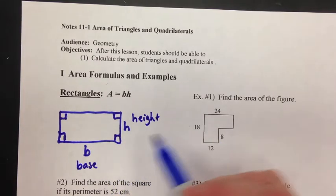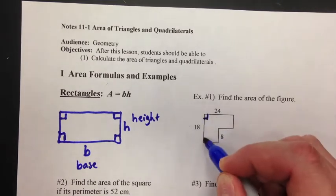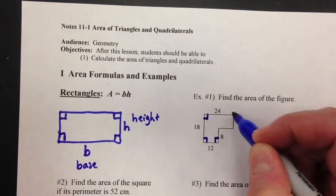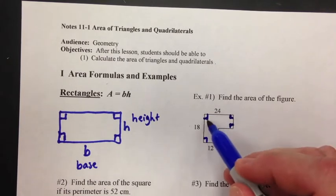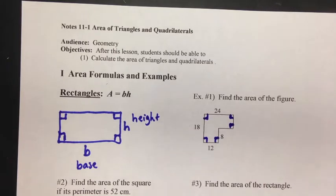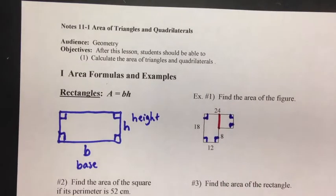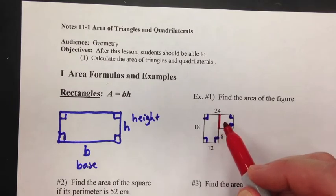Example number one, find the area of the figure. Now, the first thing we have to do here is we're going to assume that all of these are right angles. Now this is not a rectangle, but the question is, could we somehow divide this shape into rectangles? There's a lot of ways to do this, but I'm going to divide it like this. I'm going to create a rectangle on the left and a rectangle on the right.